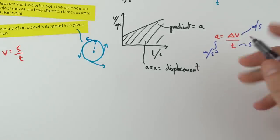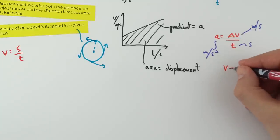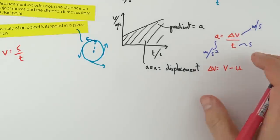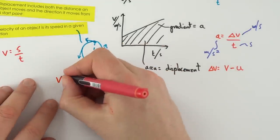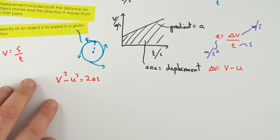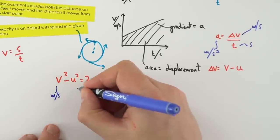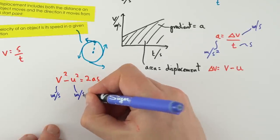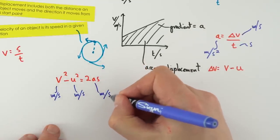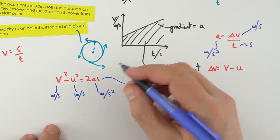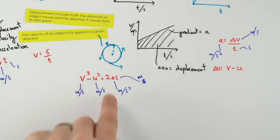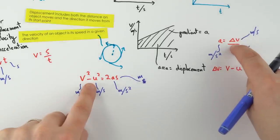The change in velocity is the difference between final velocity V and initial velocity U. We can also use the equation V² − U² = 2as, where V is final velocity in m/s, U is initial velocity in m/s (often zero), a is acceleration in m/s², and s is distance in metres. Identifying what you know from a question helps you choose the right equation.